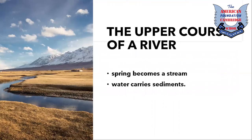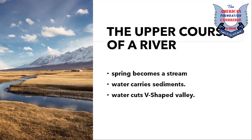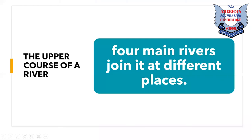The spring becomes a stream as it flows downhill. The fast-flowing water carries sediments and cuts a V-shaped valley. The valley is not straight because the stream changes direction when it encounters hard rock called a spur. When there are many spurs, they are called interlocking spurs. This is the upper course of the river, where water flows fast downhill.